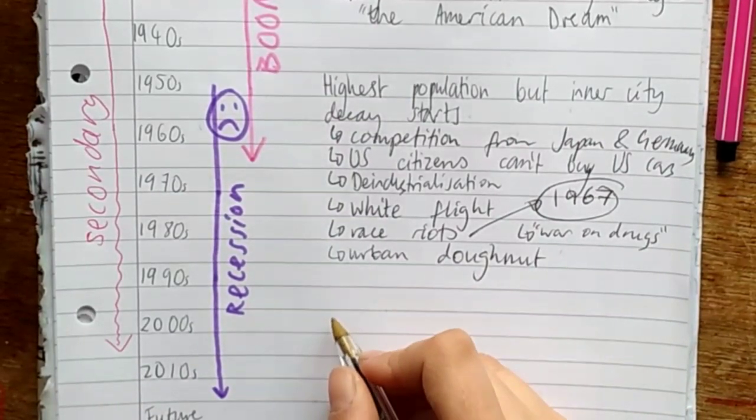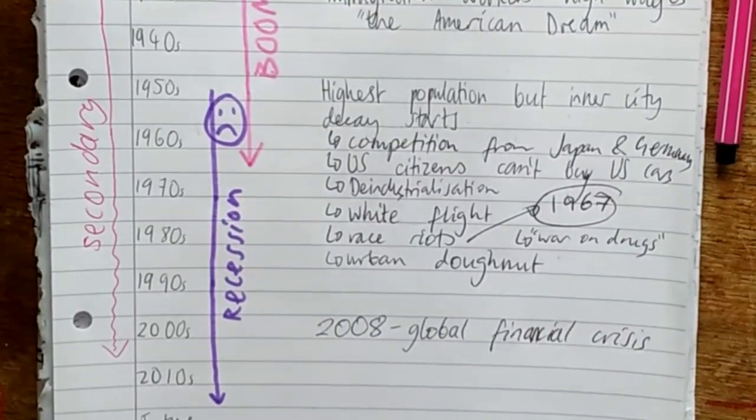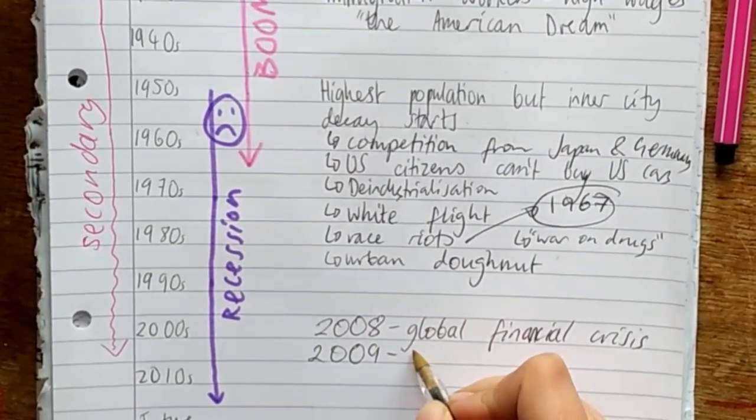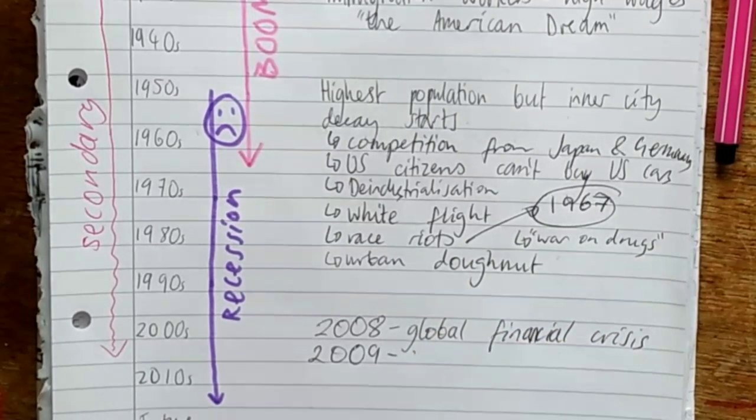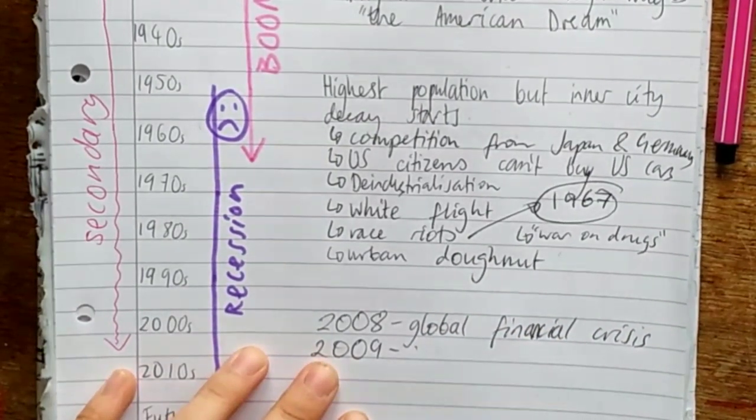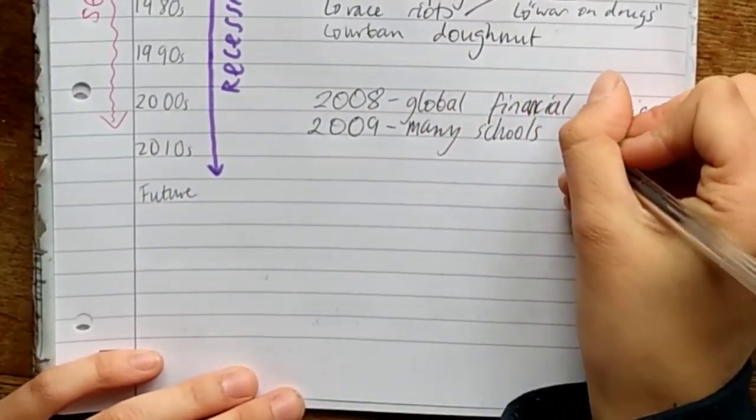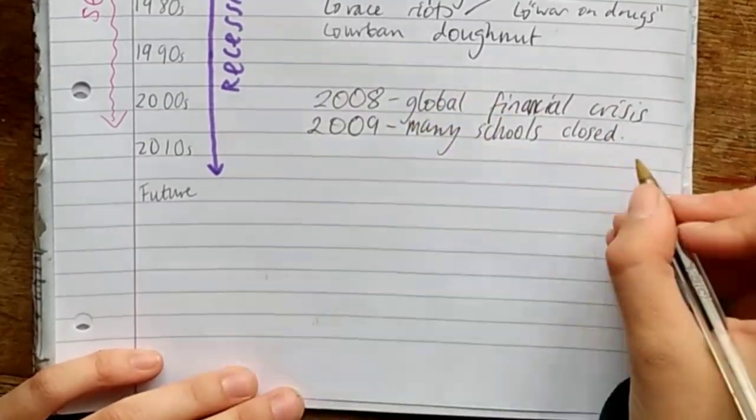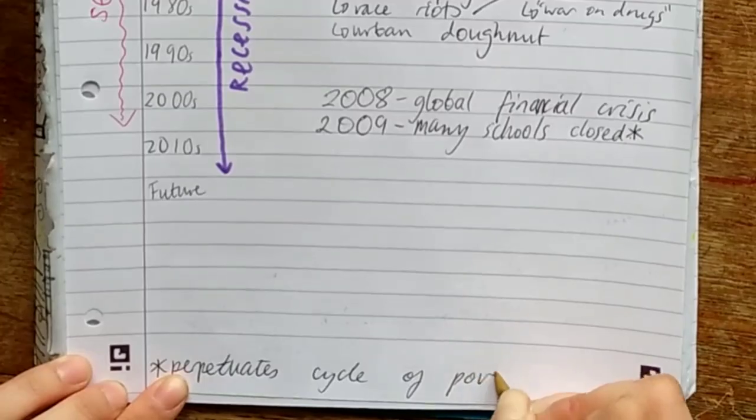The 21st century. In 2008, we have the global financial crisis, which even worsened the situation in Detroit. In 2009, more than 80 Detroit schools, especially in the inner city area, closed. This resulted in the cycle of poverty continuing as people couldn't get better qualifications in order to get jobs as the industrialization was happening. People stayed poor.